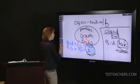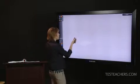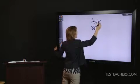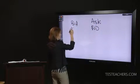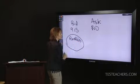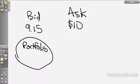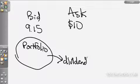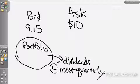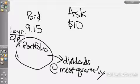Back to the open-end fund: we paid $10 ask, and the bid was $9.15. This portfolio will make income distributions to clients. There are two types: dividends, paid to shareholders at most quarterly, just like common stock; and capital gains distributions, which the fund can make at most once per year.